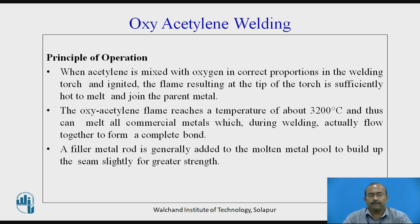For oxyacetylene welding, the principle of operation is: when acetylene is mixed with oxygen in the correct proportion in the welding torch and ignited, the flame at the tip of the torch is sufficiently hot to melt and join the parent metal. The oxyacetylene flame reaches a temperature of about 3200°C and can melt all commercial metals, which flow together during welding to form a complete bond. A filler metal rod is generally added to the molten metal pool to build up the seam slightly for greater strength.